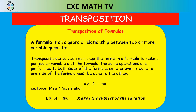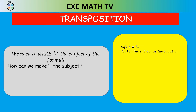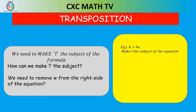Area is length times width, and we need to make L the subject of the formula. We need to remove the W from the right side of the equation. To remove W, we divide by W. Remember: anything we do to one side of the equation, we have to do to the other. So we divide the area by W as well. That gives us area over width equals length — the length is area over the width. That's transposing a formula.